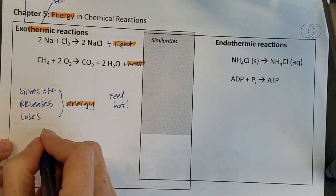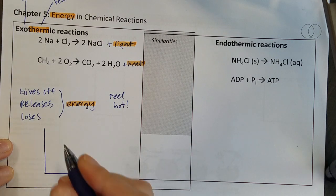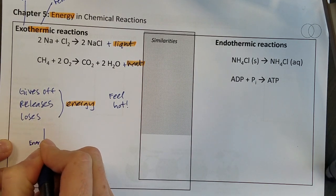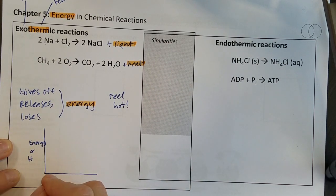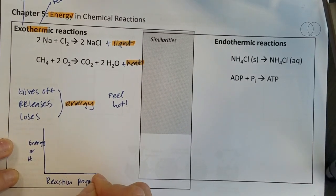The last way that we can look at these exothermic reactions is we'll look at a graph of energy or sometimes you'll see H which can stand for heat or enthalpy and then on the x-axis we'll see reaction progress.